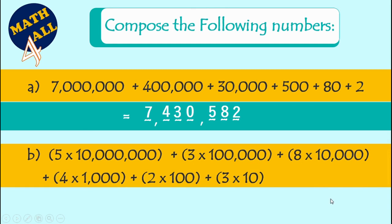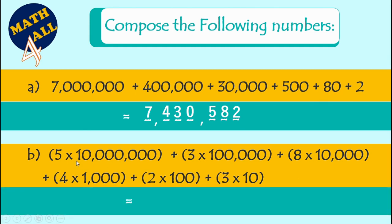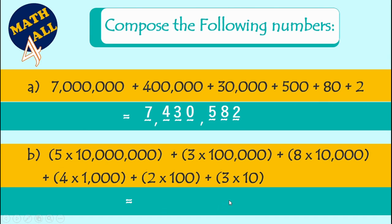Let's see another example — example B. We want to compose this example. At first, as in the previous example, you will search for the biggest value. Here we go — the biggest value is five by ten million. Now count how many digits in this number: one, two, three, four, five, six, seven, eight. So you have to write a number with eight digits.